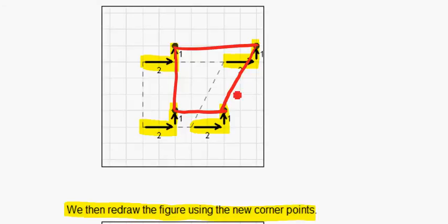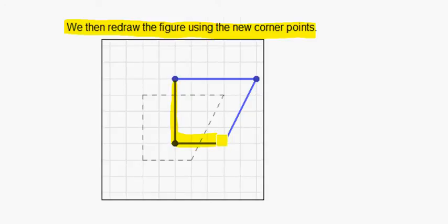So we can see our translated shape. It should look like this. We move each corner piece two to the right and one up. You can see that we slid our figure like that.